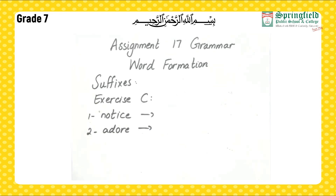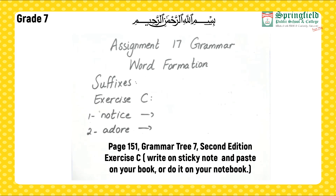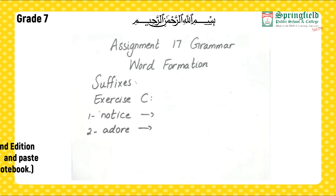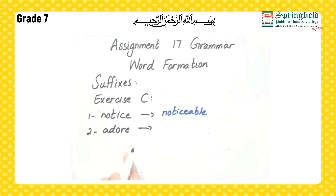Our next exercise is Exercise C: use appropriate suffixes from the table above to form new words. The table is given in your assignment as well as in your book. The first example is notice — we can make noticeable. Adore becomes adorable. You have to do the rest in the same way.